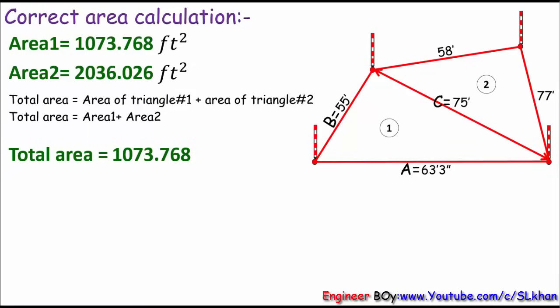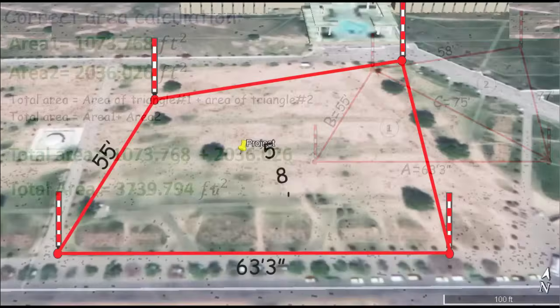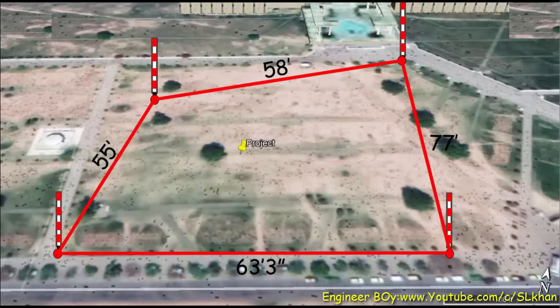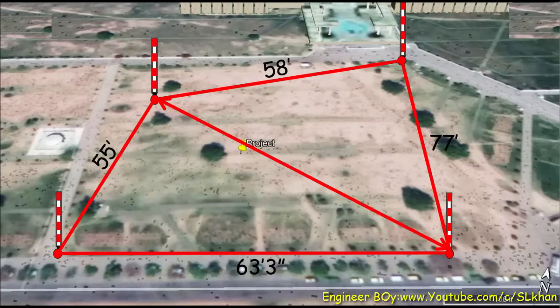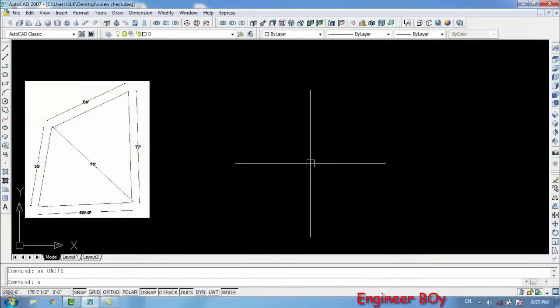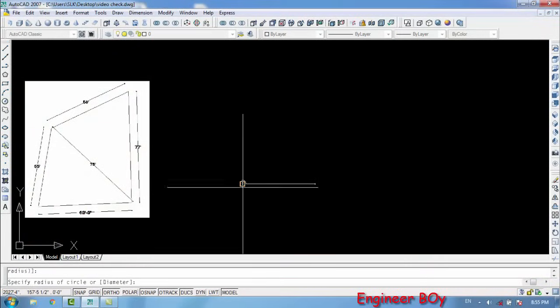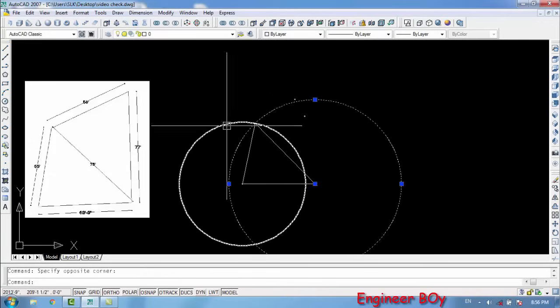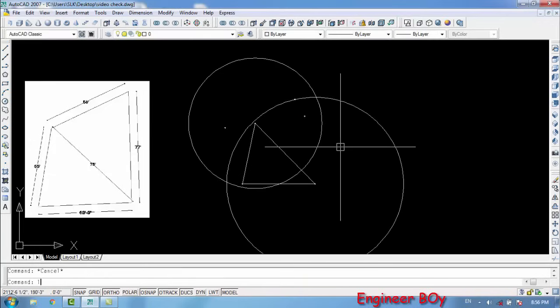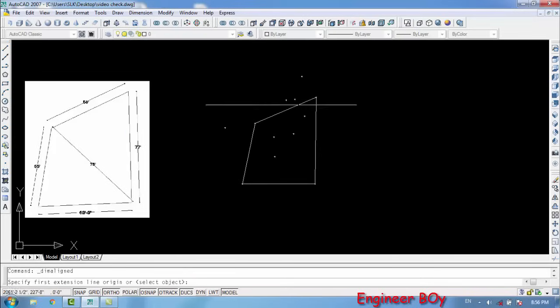Now let's draw the same property in AutoCAD to check which formula is okay. I will draw this quickly because I don't want the video to be longer. As you can see, I have drawn the same property which area was determined by me a few seconds ago. Now let me apply a nice function in AutoCAD to determine its area.